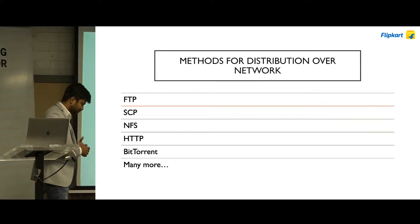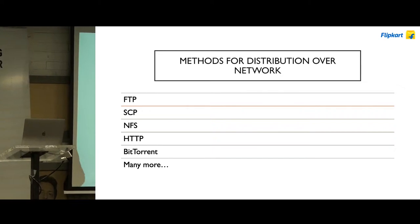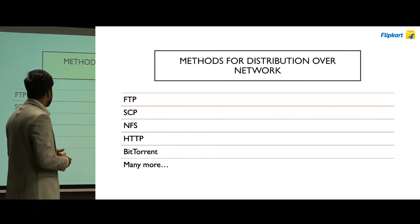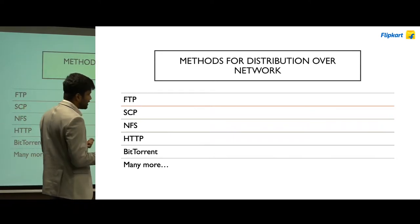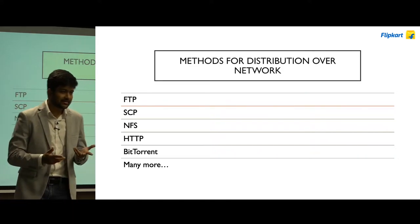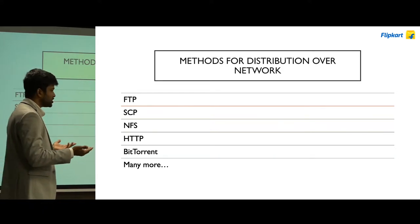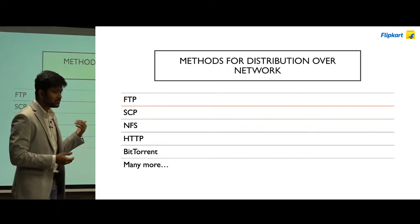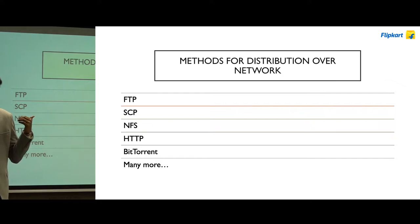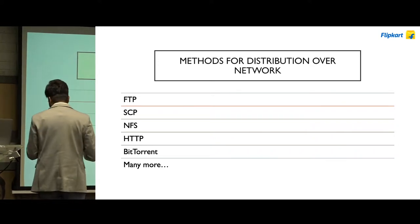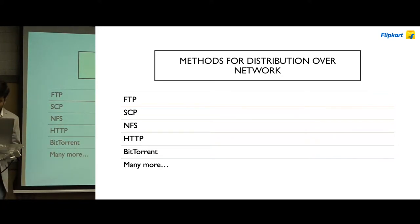When you want to distribute files from one machine to another over a network, there are tons of protocols to do that. You have the time-tested FTP. You have everyone's favorite HTTP, which transfers CSS, JS, and HTML files from a server to a client. And you have BitTorrent. BitTorrent actually accounts for 5% of internet traffic in downloads and more than 30% of internet traffic in uploads.